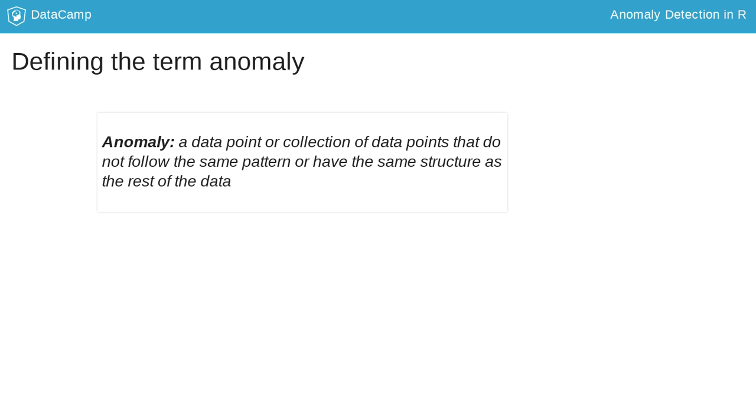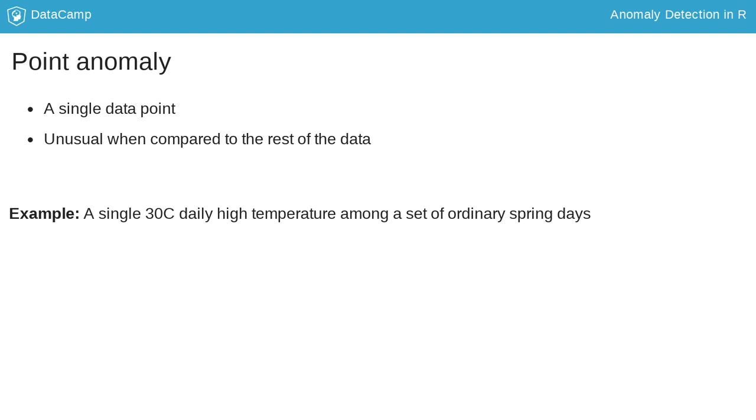To make this clearer, let's consider some specific examples. A point anomaly is the simplest type of anomaly and is the motivation for many of the techniques covered by this course. A point anomaly is defined as a single data point that is unusual or anomalous compared to the rest of the data.